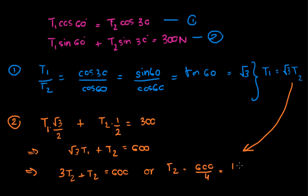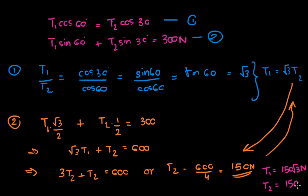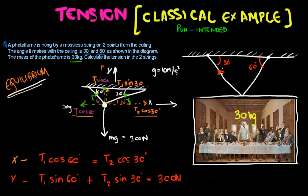So T2 equals 600 divided by 4, which equals 150 newtons. Substituting back, T1 equals 150 root 3 newtons. So T1 equals 150√3 newtons and T2 equals 150 newtons. I hope you got this — I'll be posting one more example which will be slightly different and is a classical example, so you'll love it. See you in the next video.